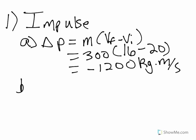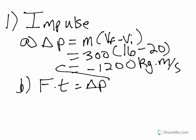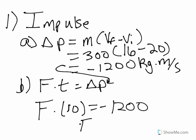For part b, it's asking us to find the applied force. We're going to use the impulse formula: force times time equals the change in momentum. We plug in negative 1200 for the change in momentum, the time is 10 seconds, so the force ends up being 120 newtons.